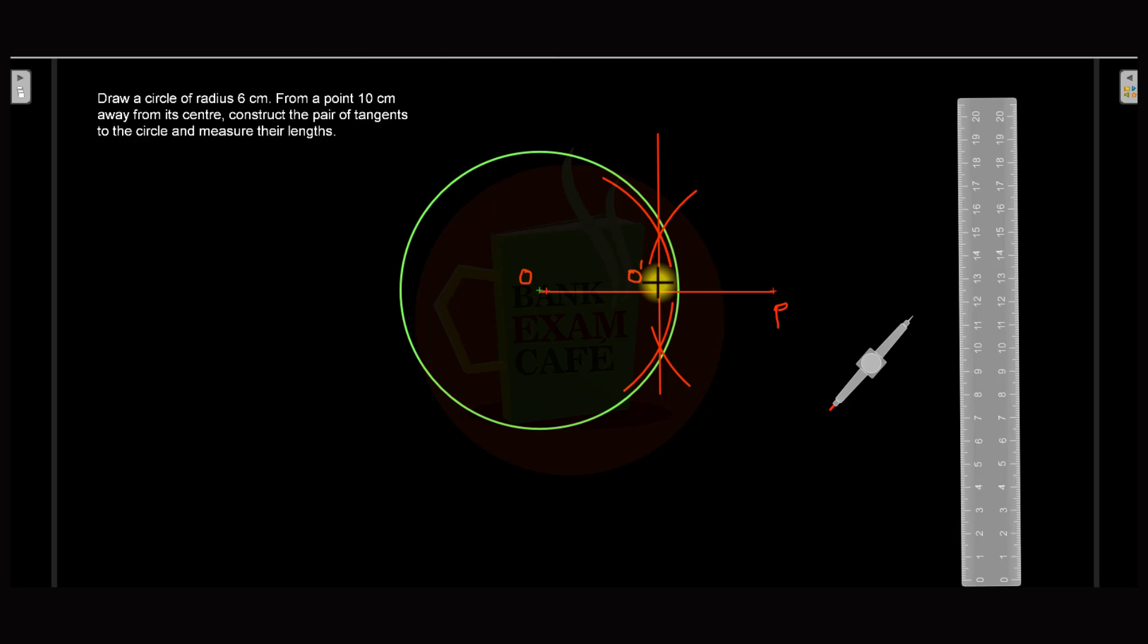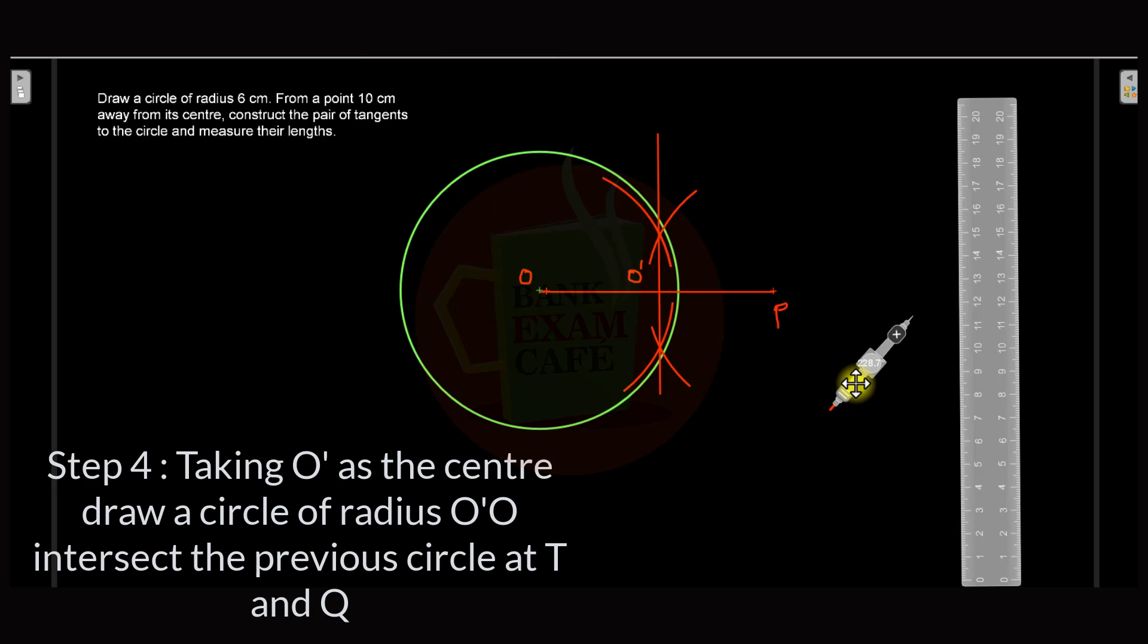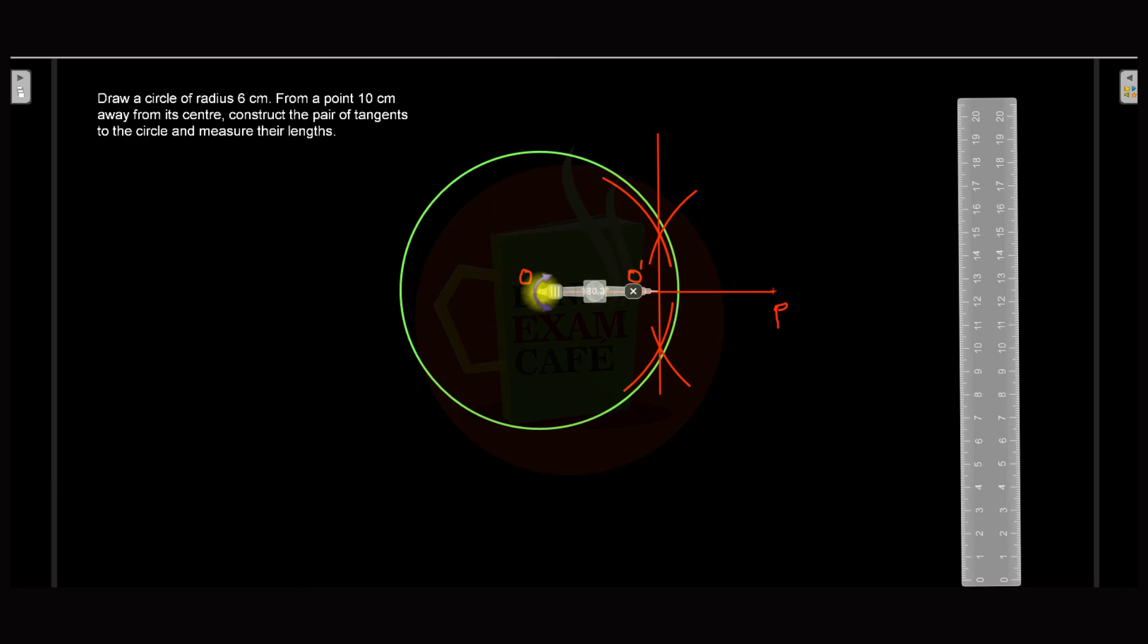So this point is O'. Now take the compass, put the pointer at O', and take the radius equal to O'P. After taking this radius, draw a circle intersecting the previous circle on both sides.